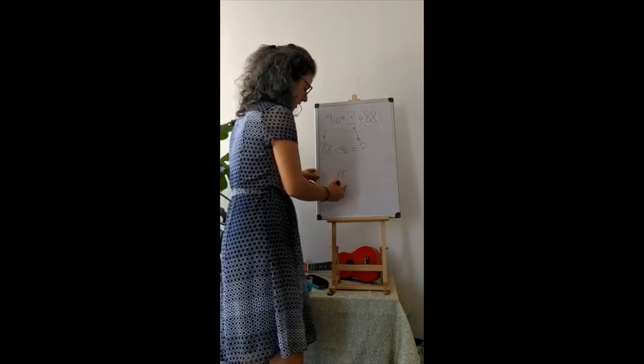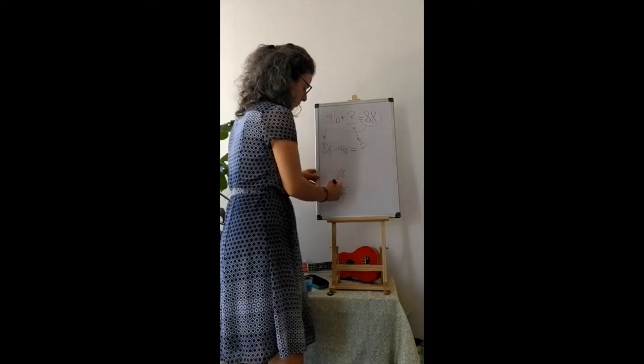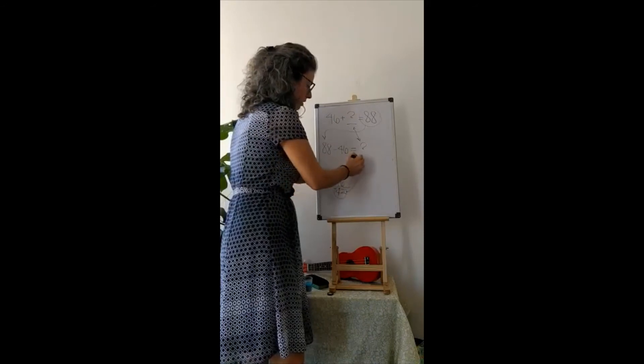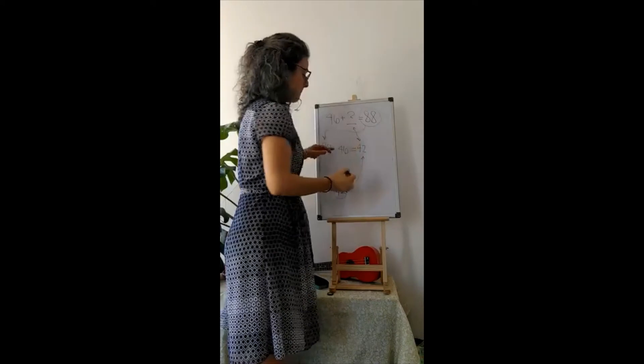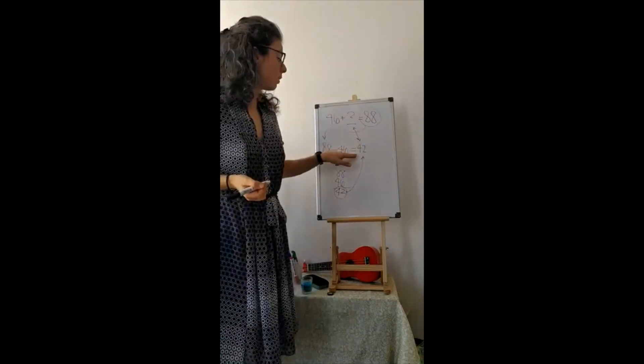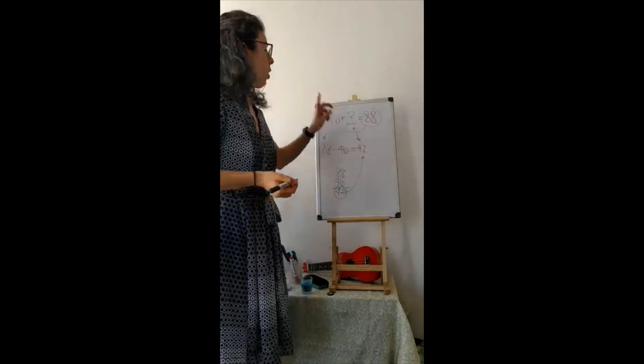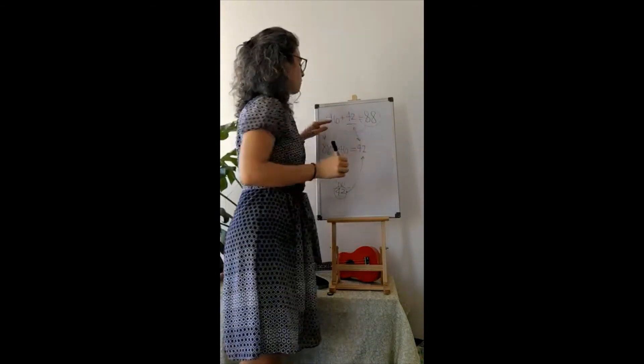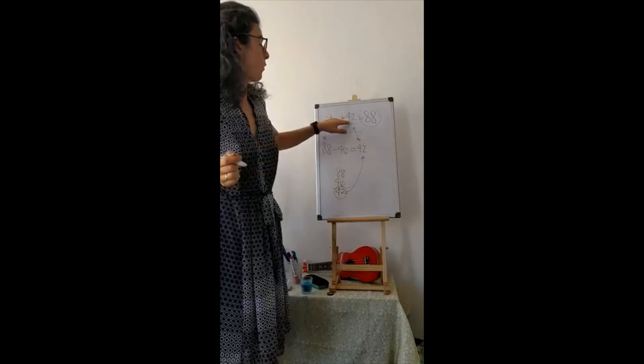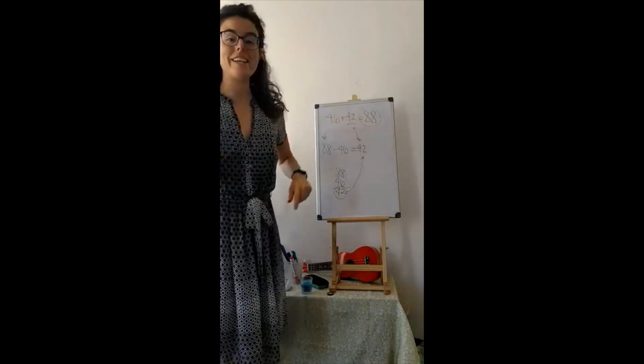Eight minus six is two. Eight minus four is four. So I know that eighty-eight minus forty-six is equal to forty-two. Which means that forty-six plus forty-two is equal to eighty-eight.